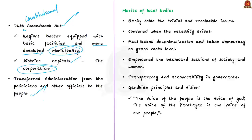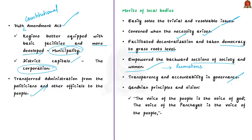What are the merits of local bodies? Local bodies can easily solve trivial and resolvable issues without assistance from state or central government, saving time and resources. They can be convened as and when necessary, enabling speedy and efficient delivery of services. Local bodies have mainly facilitated decentralization by taking democracy to the grassroot level and involving people in decision-making about local problems. They have also empowered backward sections of society and women through reservations in elected bodies. They bring transparency and accountability in governance, and give life to Gandhian principles — according to Gandhiji, the voice of the panchayat is the voice of the people.